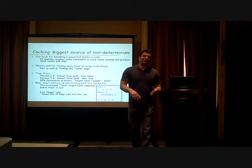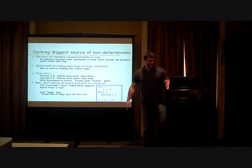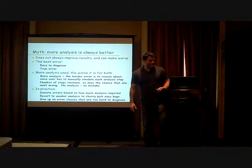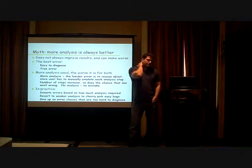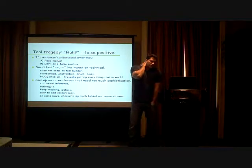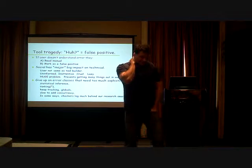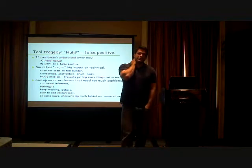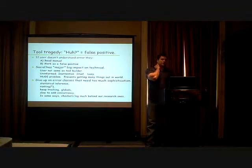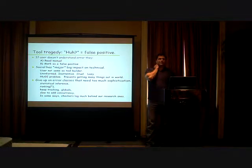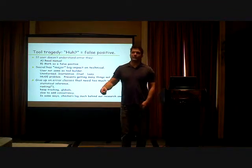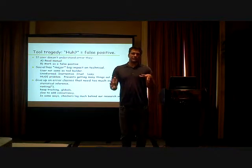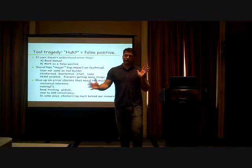True story: for version two, when we got to an if-statement, we used to follow the true path then the false path. Version three flipped it for reasons that weren't that interesting. Errors fluctuated by 20% and people just went insane. The solution? Just flip it back. One of the biggest sources of jitter is caching — if we get to the same program point with the checker in the same state, we do a model-checking-style hack where we don't explore both paths, just explore it the first time. This gets different bugs from run to run.